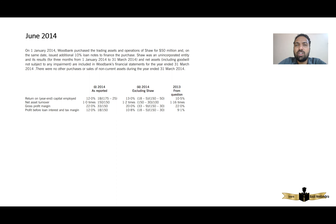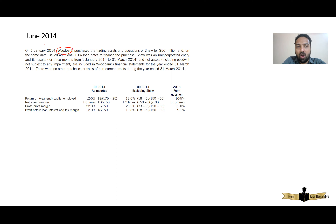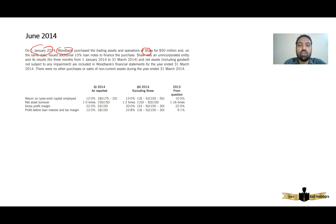It won't be on ACCA's site, but just go to Google and type June 2014 ACCA F7 paper — mostly there will be some link available. So in this particular attempt of June 2014, the company Woodbank on 1st January 2014 purchased assets and operations of another company, Shaw, for 50 million. On the same date, they issued additional 10% loan notes to finance the purchase, so Woodbank's non-current liabilities will increase.